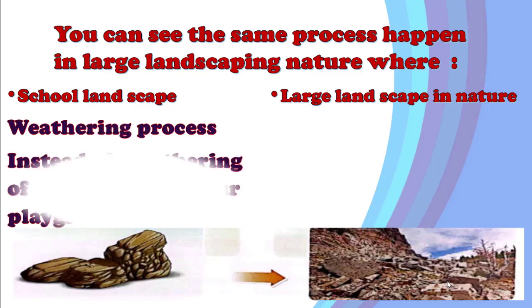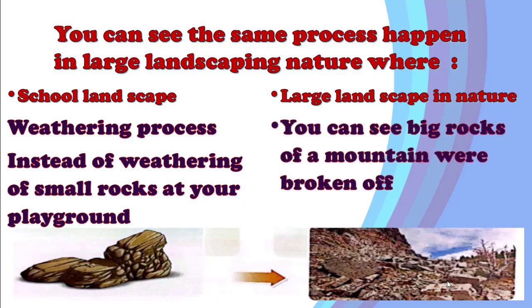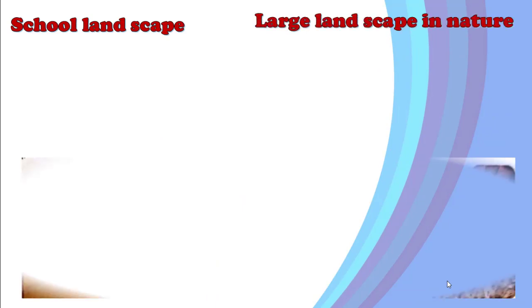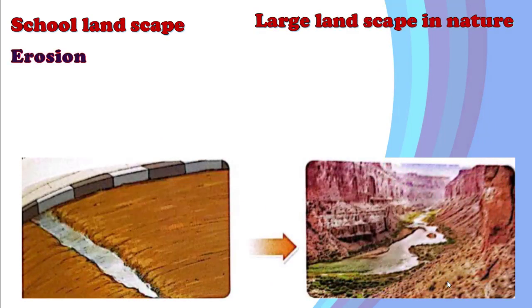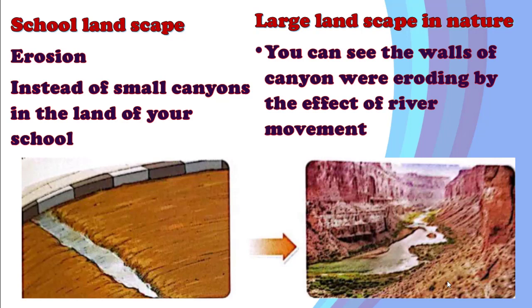In school, you can see the weathering process occur in small rocks at your playground. In nature, you can see big rocks of a mountain being broken down — this is an example of the weathering process. For erosion: instead of small canyons in your school, in nature you can see the walls of canyons removed by the effects of river movement. Big canyons are formed by the effects of rivers on mountains.